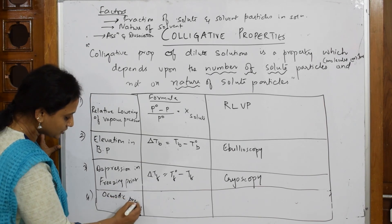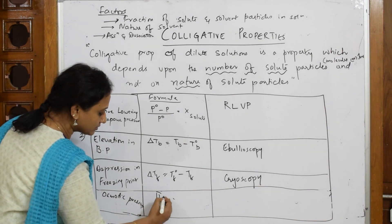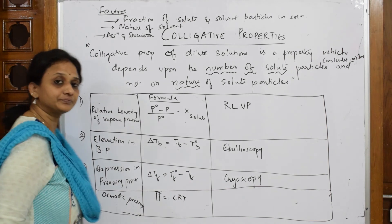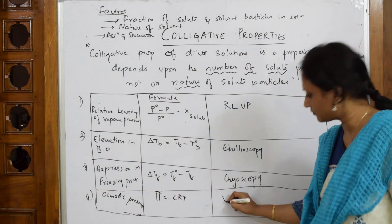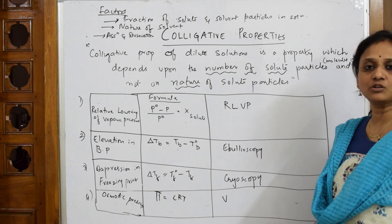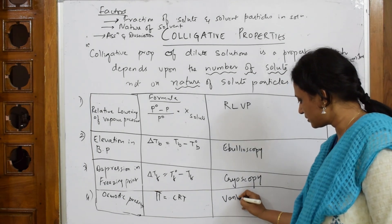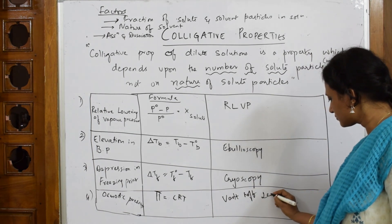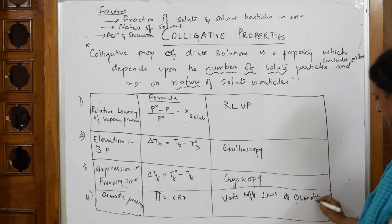In osmotic pressure, the formula which we are going to learn is pi equals CRT. And the name given to this is—in the exam they ask you what are Van't Hoff's laws of osmotic pressure. This is what you are going to do. So the name is studied under Van't Hoff's laws of osmotic pressure.